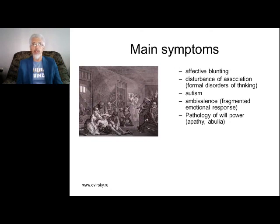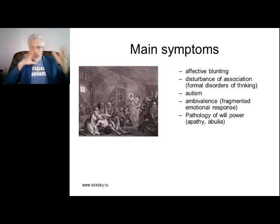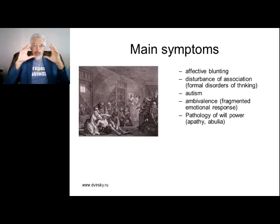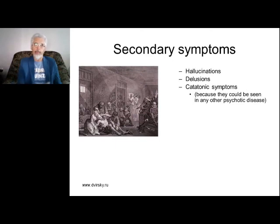Ambivalence — a splitting of emotional response — means the patient has two opposite emotions at the same time. For example, love feelings and angry feelings toward the same thing, or liking homeless people but disliking parents. Secondary symptoms depend on the type of schizophrenia — like delusions, hallucinations, and catatonic symptoms. Without main symptoms, we cannot diagnose schizophrenia. A patient who has hallucinations but no main symptoms is not a schizophrenic patient.